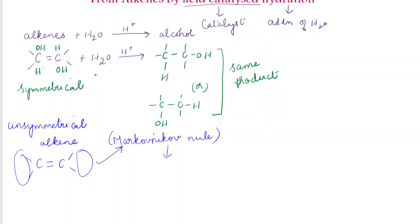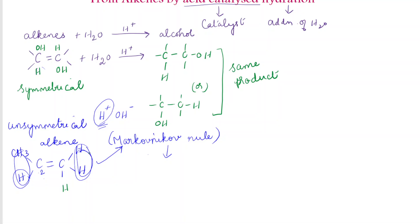So what is Markovnikov rule here? We are going to add hydrogen to one carbon and OH to another carbon. The H is added to that carbon of C=C which has the higher number of hydrogen atoms. For example, consider a carbon with H, H on carbon 1 and CH3, H on carbon 2. Carbon 1 has two hydrogen atoms whereas carbon 2 has only one hydrogen atom. So hydrogen will be added to carbon 1 and OH will be added to carbon 2. This is Markovnikov rule.